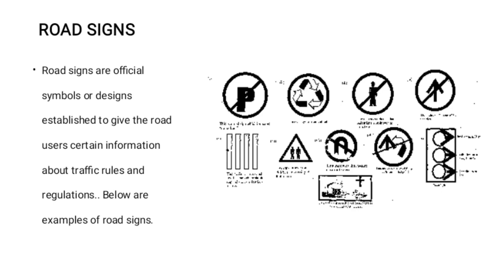5. A sign indicating that children are crossing at that junction. 6. A sign indicating that U-turn is not allowed. 7. A sign meaning that overtaking is not allowed at this point. 8. Traffic lights. 9. A sign that shows that a hospital is located at that point.